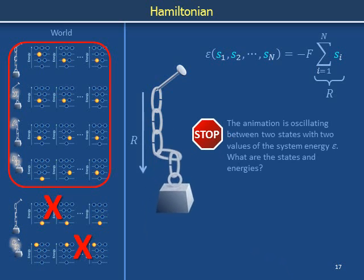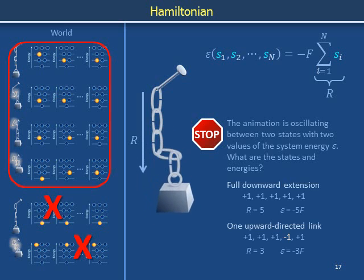The animation oscillates between two states. Each state corresponds to its own value of the system energy squiggly E. When the chain is fully extended downward, its length is R equals 5 and its energy is minus 5F. When precisely one link points upward, the length of the chain is instead R equals 3, and the corresponding system energy is minus 3F. Thus, using this convention for writing down the energy function — also known as the Hamiltonian of the system — the energy increase resulting from lifting one link in the chain is 2F. The more downwardly extended the chain, the lower the gravitational potential energy of the weight and the Earth.